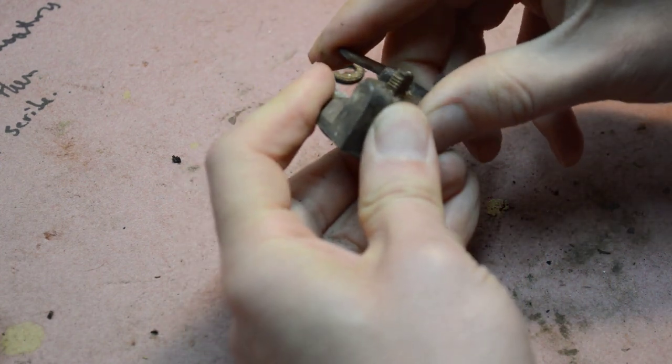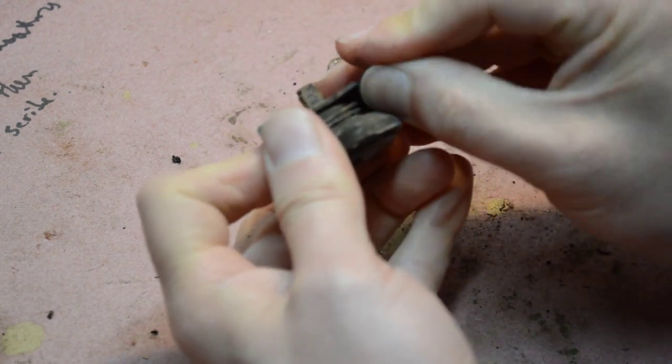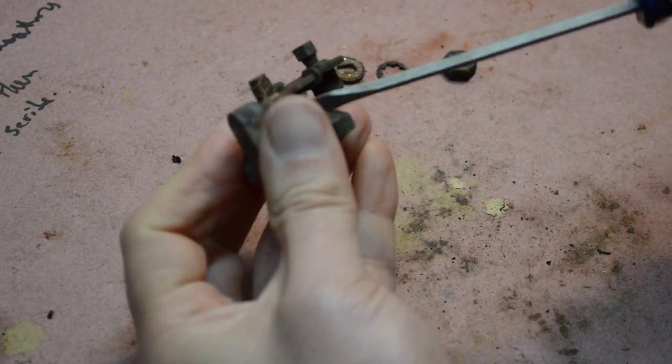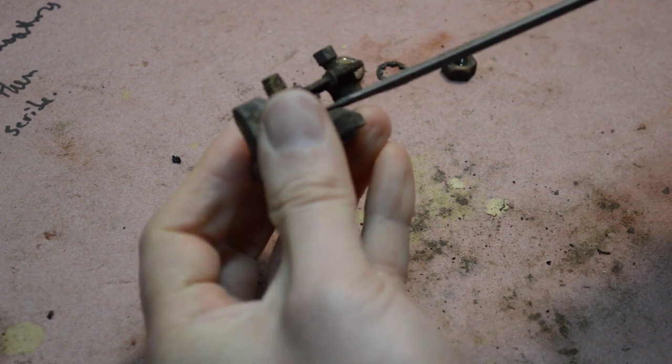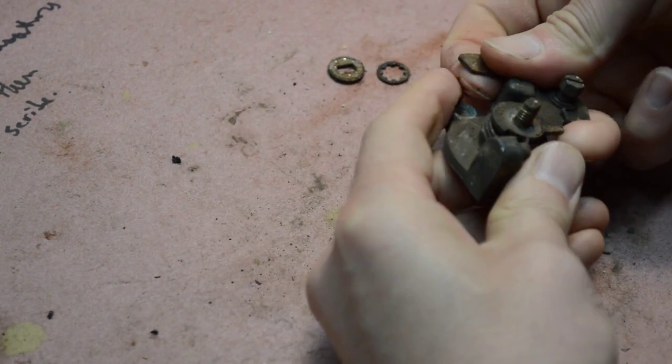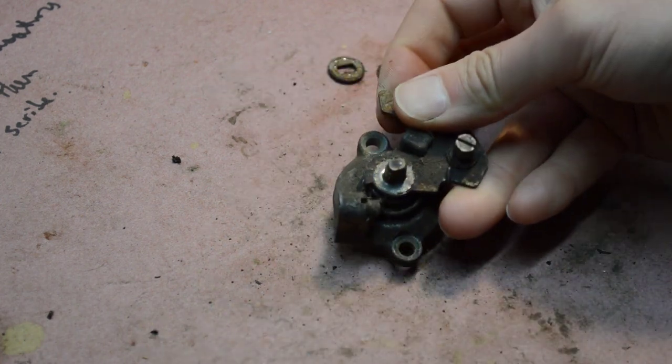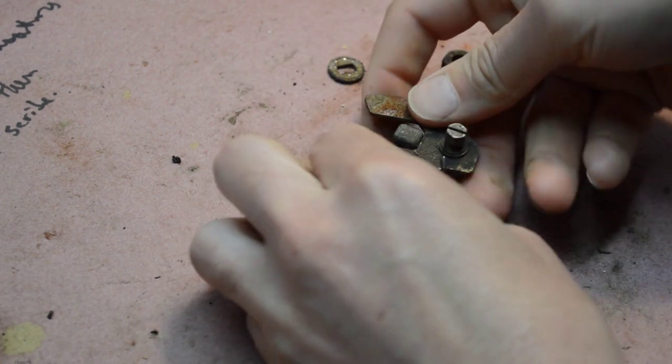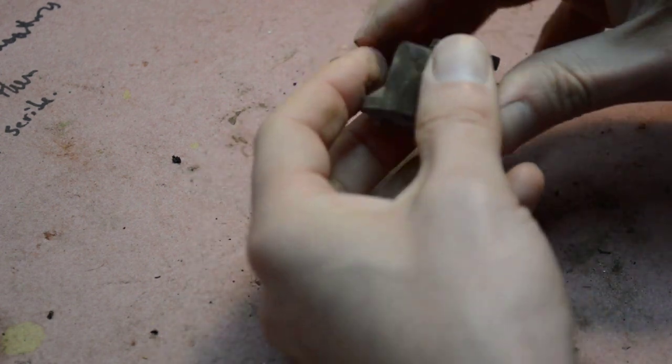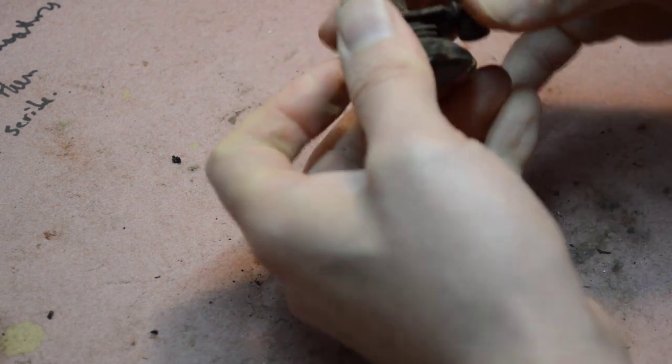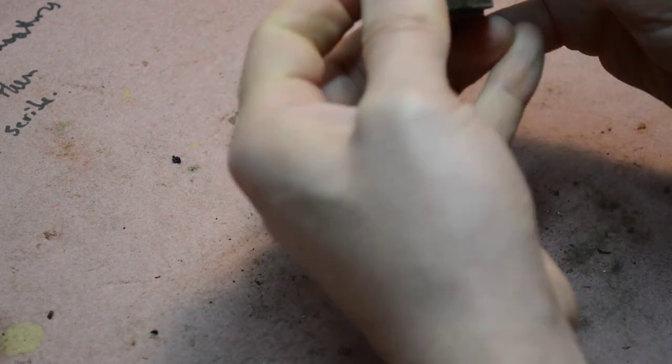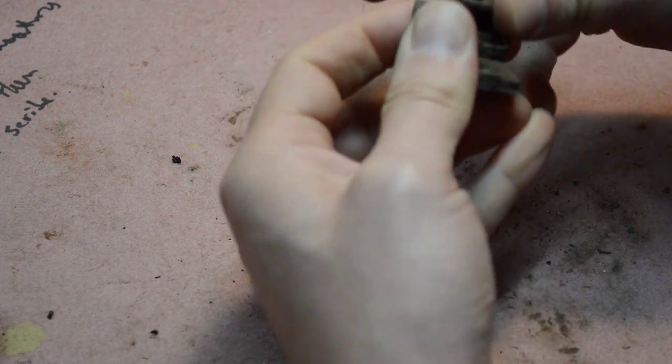Just kind of wiggle it back and forth. You may need to do a little bit of prying with a screwdriver, but again, just like normal. Don't go nuts on it, because you're really just going to break it. There's a spring underneath. You want to make sure that's coming off with it too.